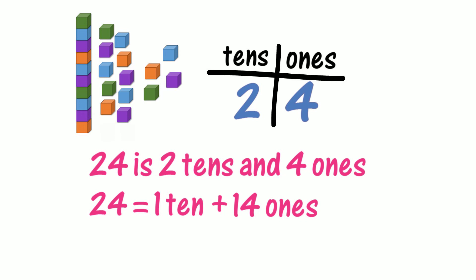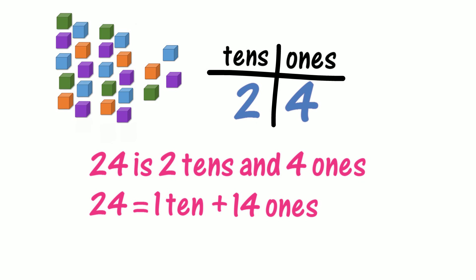If we read across the columns on the place value chart, can we see the one ten and fourteen ones? We can't see the one ten and fourteen ones by reading across the columns on the place value chart. So we've described 24 using non-standard place value in a way that can't be read across the columns. Could we describe 24 in another way using non-standard place value? Let's break our other ten into ten ones. How many ones do we have now? Do we have 24 ones? Could we describe 24 using non-standard place value as 24 ones?